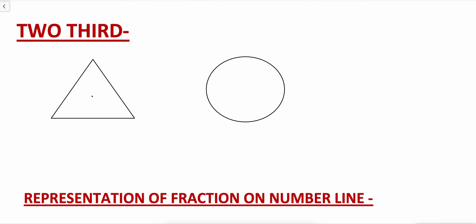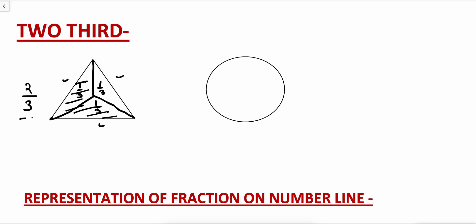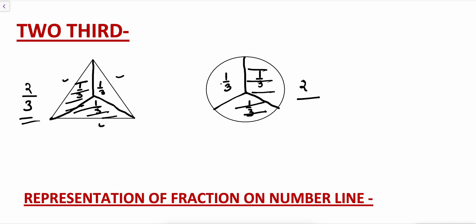Now let's divide this triangle into three equal parts. This portion is one by three, this portion is one by three, and this portion is one by three. And if I am talking about any two portions — suppose this one and this one — this is two parts out of one, two, and three. So this is two-third. This is how we write in fractions.